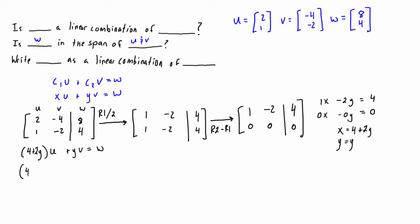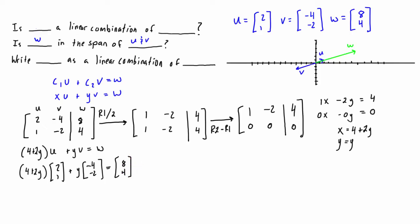So if we go back and fill out the expression we had, for x we have (4 + 2y) times vector U, plus y times vector V, equal to vector W. Substituting the actual vectors: (4 + 2y) times (2, 1), plus y times (-4, -2), equals (8, 4). You can see when we draw them all in standard position that they are all parallel to each other. There will be more than one combination of U and V that gives us W, and that's really evident here because y can be absolutely any number we want and this expression should work.